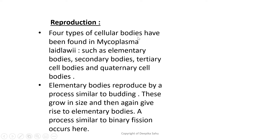Moving on to reproduction in mycoplasma: four types of cellular bodies have been found in mycoplasma — elementary, secondary, tertiary, and quaternary cell bodies. Elementary bodies reproduce by a process similar to budding — they grow in size and then give rise to new elementary bodies in a process similar to binary fission.